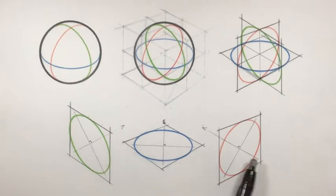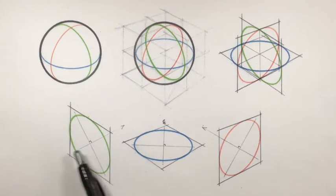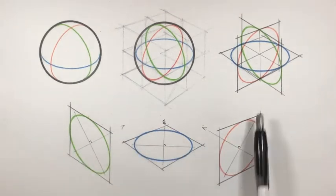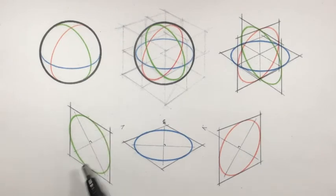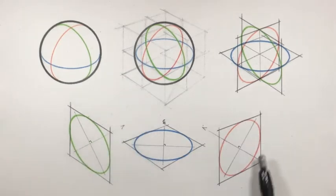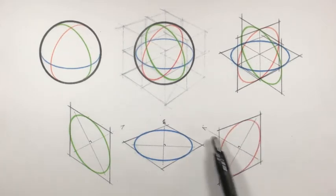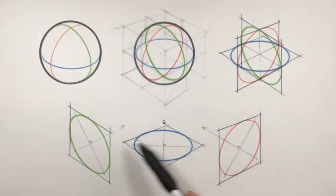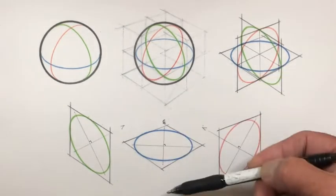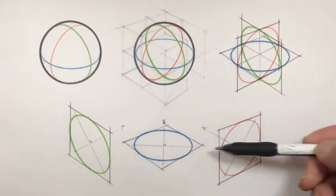Here I'm showing the three ellipses on their individual planes with the major and minor axes of each indicated. On the right vertical ellipse — the green one — the minor axis goes to the vanishing point on the right. On the left vertical plane — the red ellipse — its minor axis goes to the left vanishing point. And for the horizontal ellipse — the blue one — the center line is vertical (your minor axis), and 90 degrees to that is your major axis.